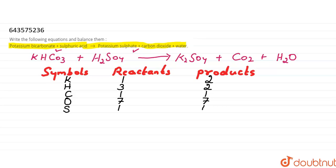Let me multiply potassium bicarbonate by two to equalize the potassium atoms. When I multiply by two, there are two potassium atoms, two hydrogen atoms, two carbon atoms, and six oxygen atoms (three times two equals six).